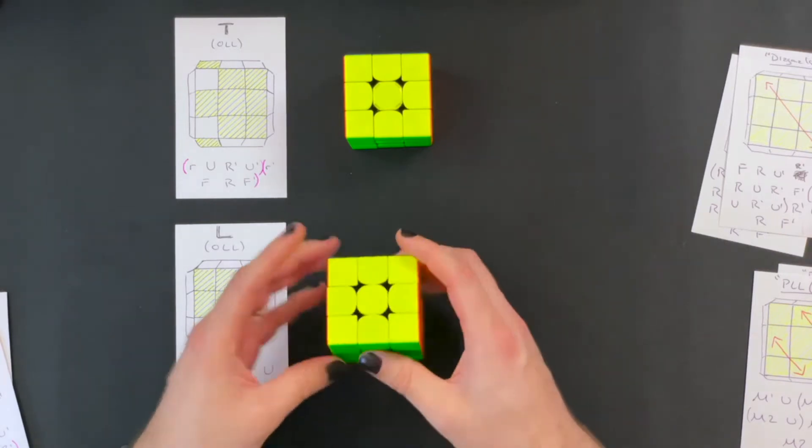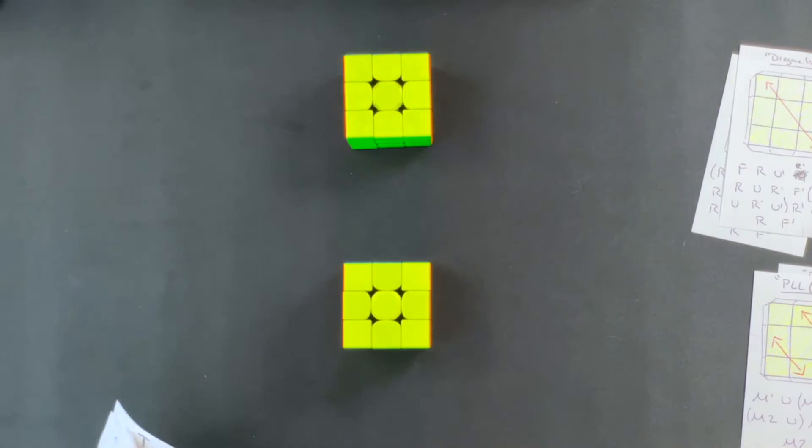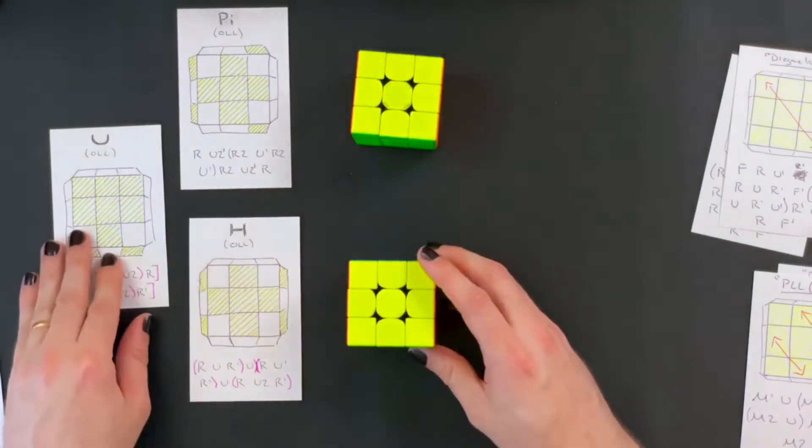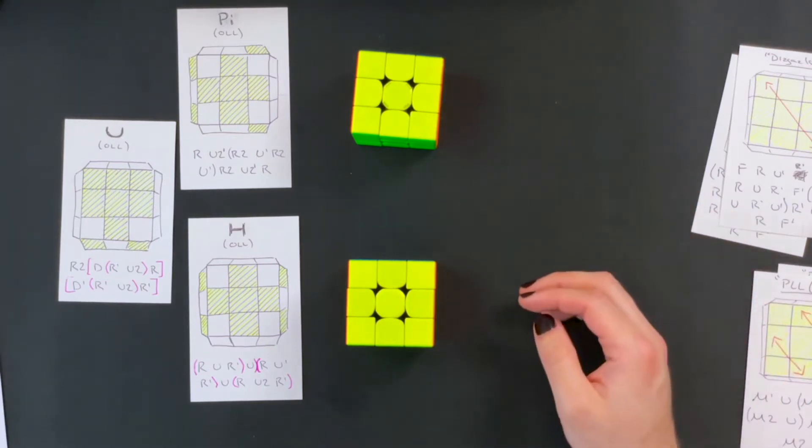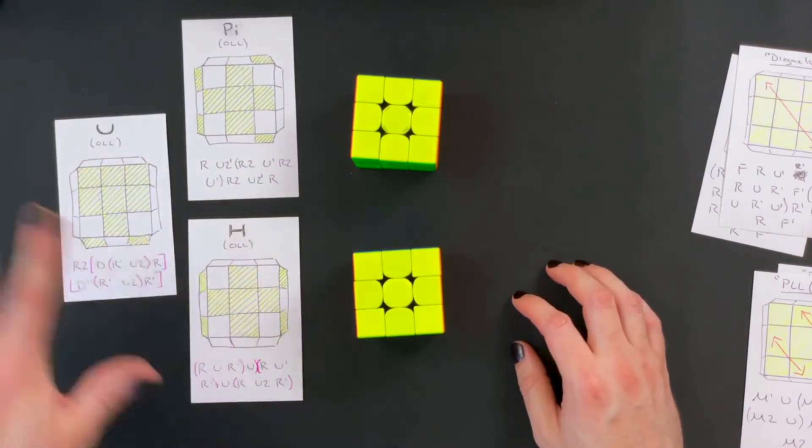The other algorithms for OLL do not quite work that way and so that is pi H and U. These do not lead to a clean situation where you can just do another OLL to solve it. H leads to the H when then you have to do the PLL H to solve it. U leads to somewhere else and pi leads to somewhere else. So you have to know more than just a couple OLL algorithms to do that.